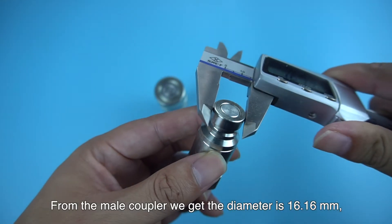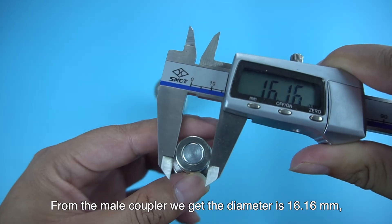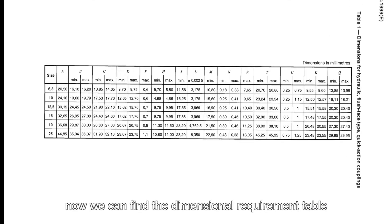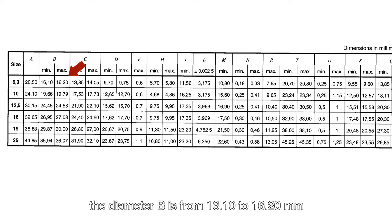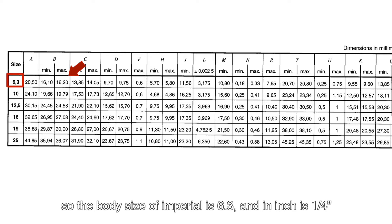From the male coupler we get the diameter is 16.16 mm. Now we can find the dimensional requirement table. The diameter B is from 16.10 to 16.20 mm, so the body size of imperial is 6.3 and an inch is 1 quarter.